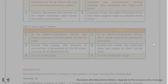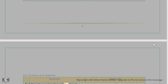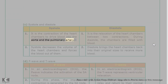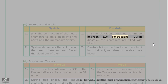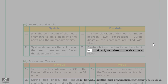Question 7C: Systole and diastole. Systole is the contraction of the heart chambers to drive blood into the aorta and the pulmonary artery; it decreases the volume of the heart chambers and forces blood out of them. Diastole is the relaxation of the heart chambers between two contractions; during diastole, the chambers are filled with blood, and diastole brings the heart chambers back to their original sizes to receive more blood.